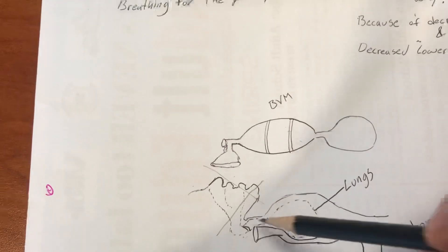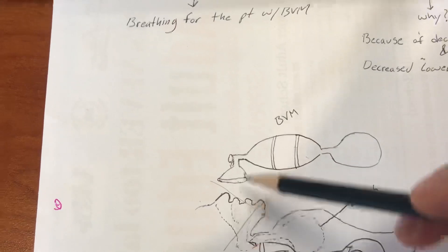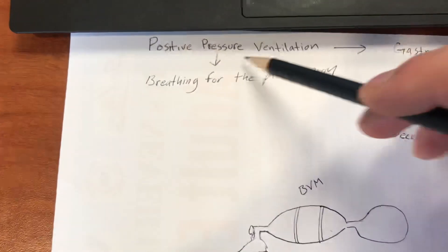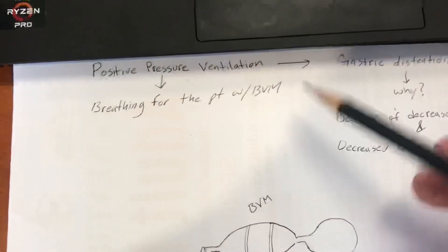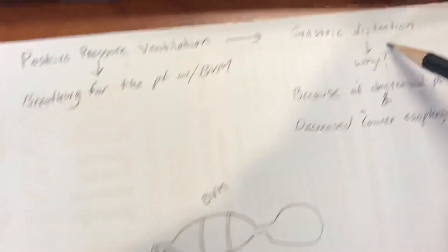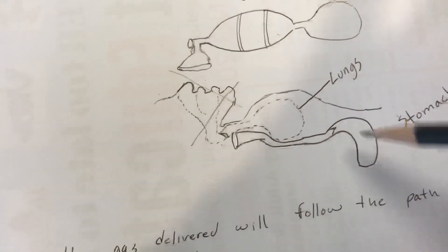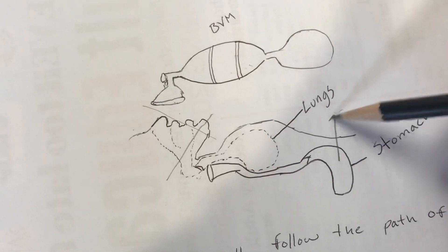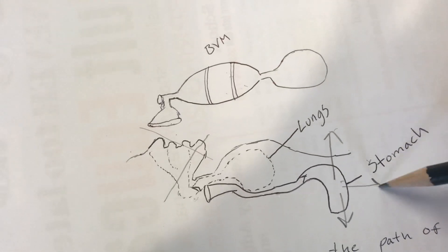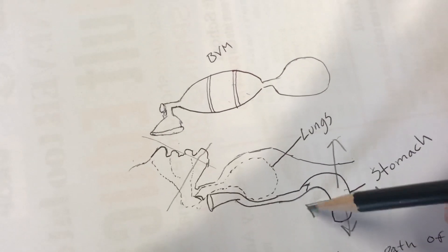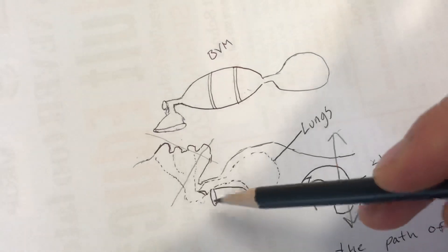That's positive pressure ventilation - you are breathing for this patient. So what is gastric distension? Gastric distension is when the stomach grows bigger and bigger, and this can happen if too much air gets into the GI tract.